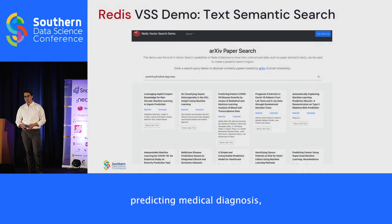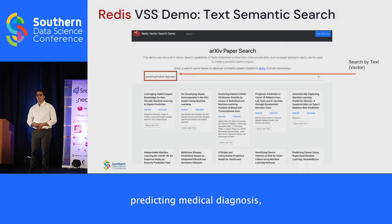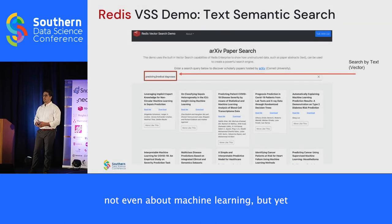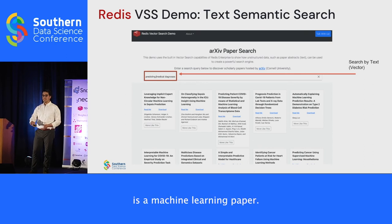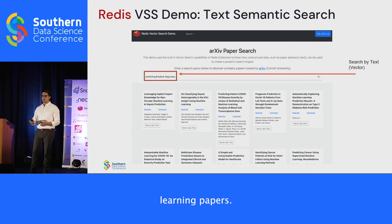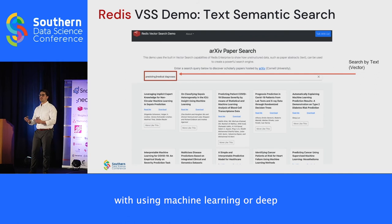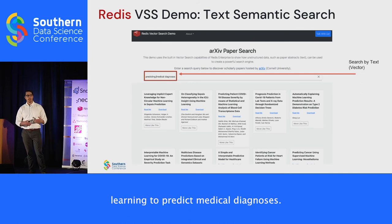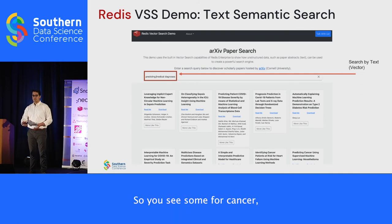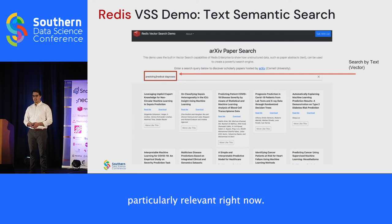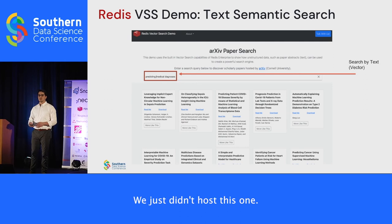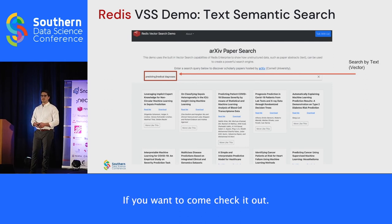Another example: 'predicting medical diagnosis' — not even a machine learning term — yet every result is a machine learning paper, each using ML or deep learning to predict medical diagnoses: some for cancer, some for COVID-19. This is a great way to enable fault tolerance in your users' search capabilities. This demo is available on request — we just didn't host it publicly, but we have a computer with it running if you want to come check it out.